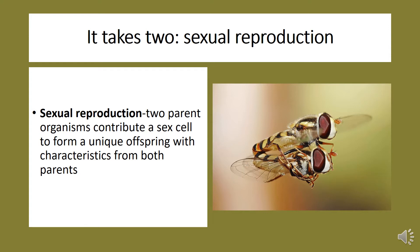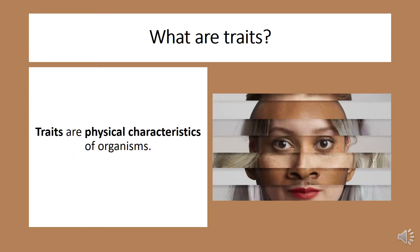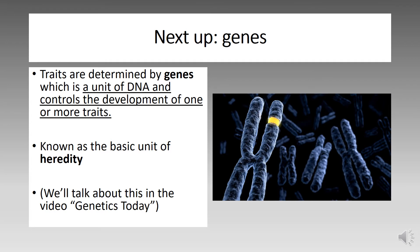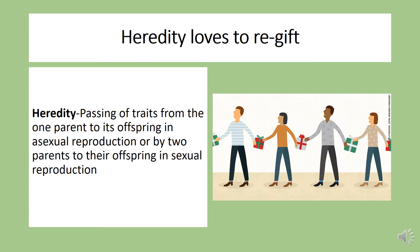Now we come to traits, which are physical characteristics of organisms. Traits are determined by genes, which is a unit of DNA and controls the development of one or more traits. It's known as the basic unit of heredity. We'll talk about this in the next video titled Genetics Today. Heredity is the passing of traits from one parent to its offspring in asexual reproduction, or by two parents to their offspring in sexual reproduction.